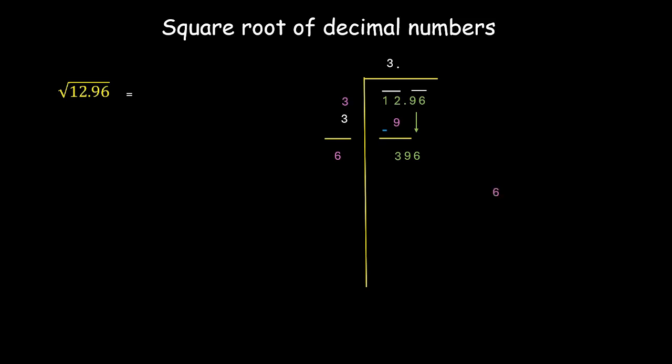Let's try it with 5. 65 into 5 is 325. Let's try this with 6 as well. 66 into 6 is 396. So let's put it over here. 66 into 6 is 396. And after the subtraction we get a 0. There are no more pairs left. So the square root of 12.96 is 3.6.